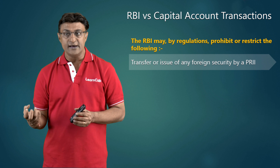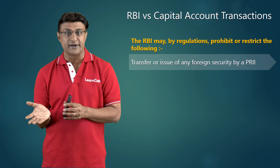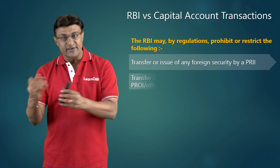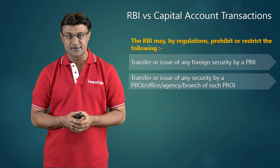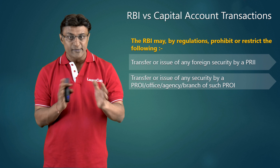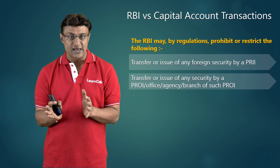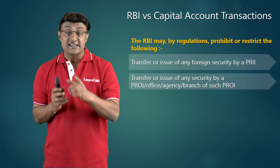We are now coming to a list of transactions which the RBI may restrict, regulate, or prohibit. These can be curbed or prohibited or restricted by the RBI — how it is actually done will come up for discussion later. The RBI positions itself under the FEMA to regulate, prohibit, or restrict capital account transactions. The first is: transfer or issue of any foreign security by a person resident in India.